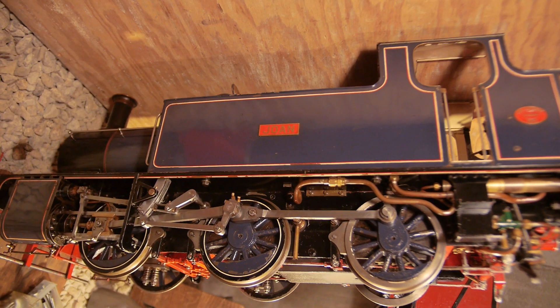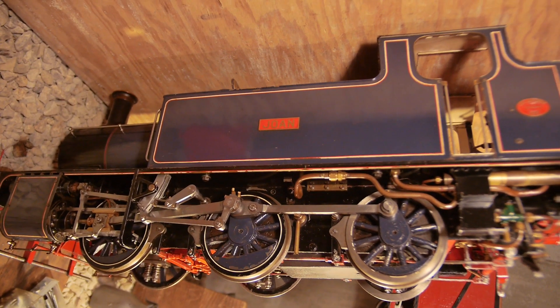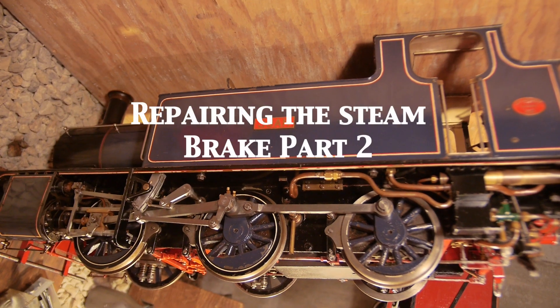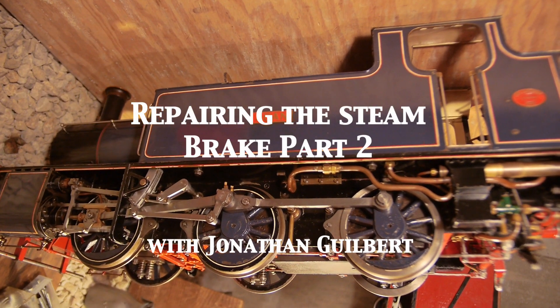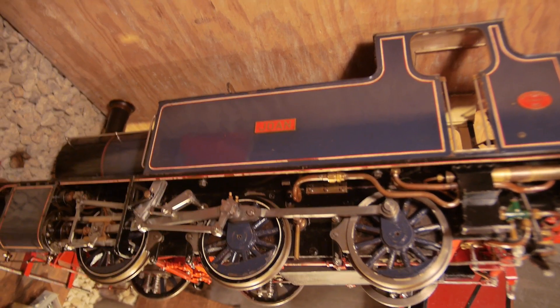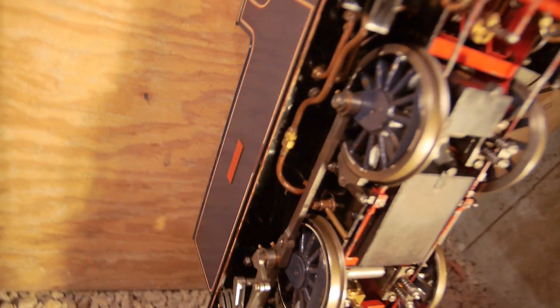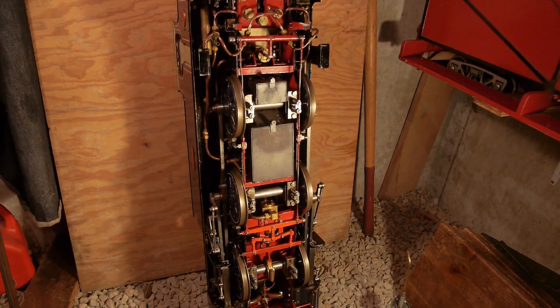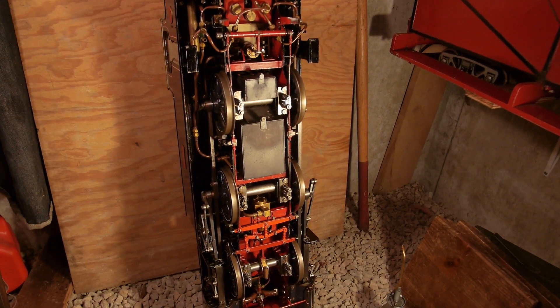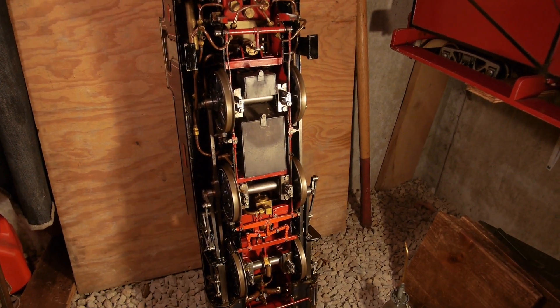I thought while the simplex is in this strange sideways position for maintaining the steam brake, we'd just take a look at the underneath. That's the loco upside down, looking from underneath. It's leant up against the wall.